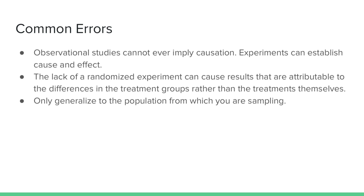One last mistake is generalizing to the wrong population. For example, if an experiment were to be done on high school students, it would only be proper to generalize the results to other high school students. It would not be appropriate to say that the results are applicable to the greater population.